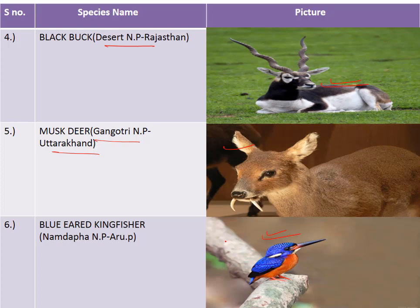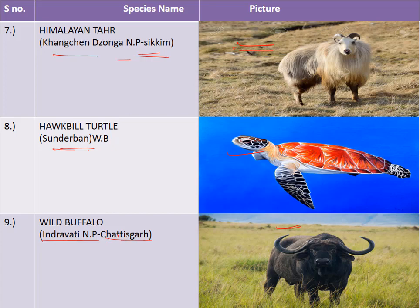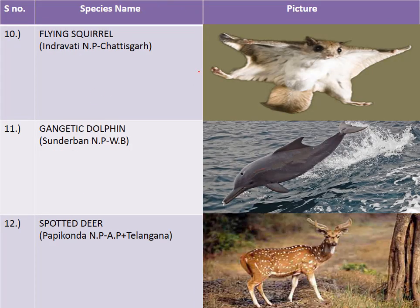The blue-eared kingfisher is found in Namdapha National Park in Arunachal Pradesh. The Himalayan tahr belongs to Kangchenjunga National Park in Sikkim. The hawksbill turtle has its habitat in Sundarbans National Park in West Bengal. The wild buffalo is native to Indravati National Park in Chhattisgarh.